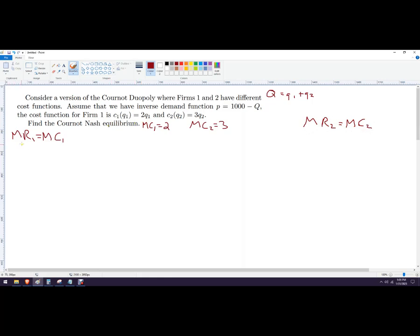So to get the marginal revenue, I need the total revenue function. Total revenue for the first firm is going to be price times quantity 1. So that would be 1,000 times Q1 minus 1,000. Actually, let me pause for a second and write this inverse demand function a little bit clearer.